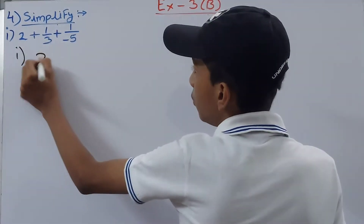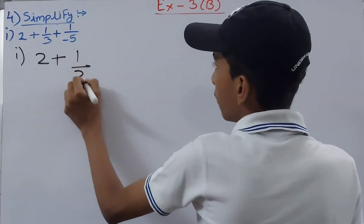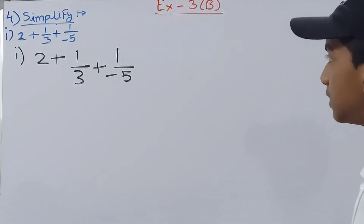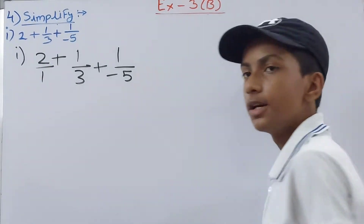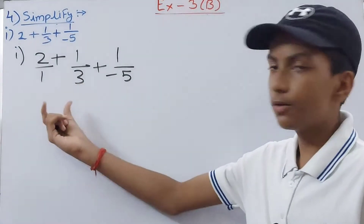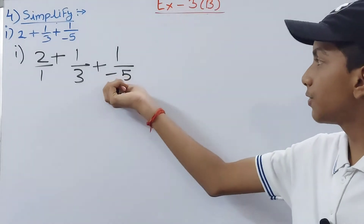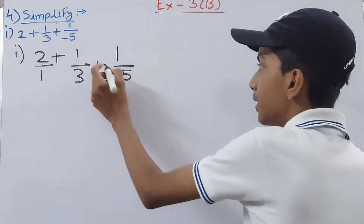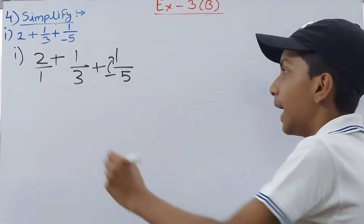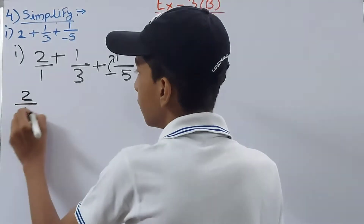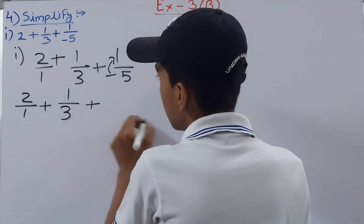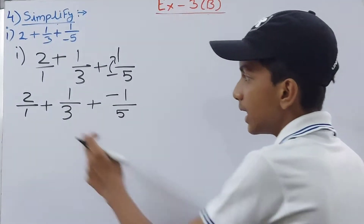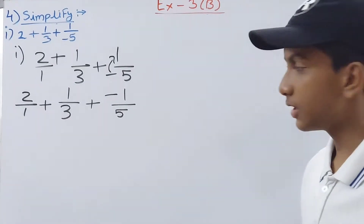In the first part we have 2 plus 1/3 plus 1/(-5). This 2 can be written as 2/1. Now this minus 5 — the numerator goes up, so we get 2/1 plus 1/3 plus (-1)/5. The LCM of 1, 3, and 5 is 15.